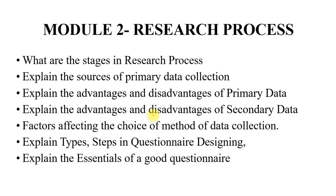For Module 2, the chapter is Research Process. Number one: what are the stages in the research process? Second: explain the sources of primary data collection. Next: explain the advantages and disadvantages of primary data. Next: explain the advantages and disadvantages of secondary data. Next: factors affecting the choice of method of data collection. Next: explain the types and steps in creating a questionnaire design. And last: explain the essentials of a good questionnaire.